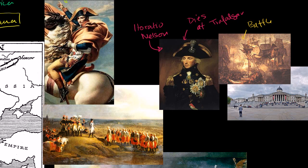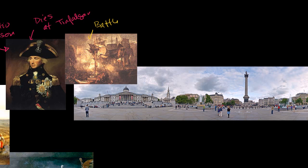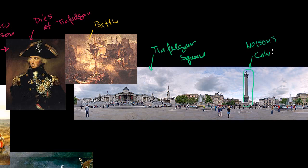Destroying the French navy at Trafalgar really established British domination of the seas. To connect that to modern-day London, Trafalgar Square is named after the Battle of Trafalgar. If you go there, you'll see Nelson's Column, named after Horatio Nelson, with a figure of Nelson himself at the very top. This all occurred during the War of the Third Coalition.